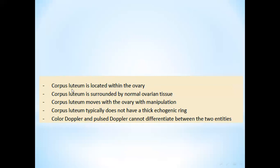First, the corpus luteum is located within the ovary and is surrounded by normal ovarian tissue — unlike an ectopic pregnancy, which may be adjacent to the ovary but is not surrounded by ovarian tissue. Corpus luteum also moves with the ovary on manipulation.